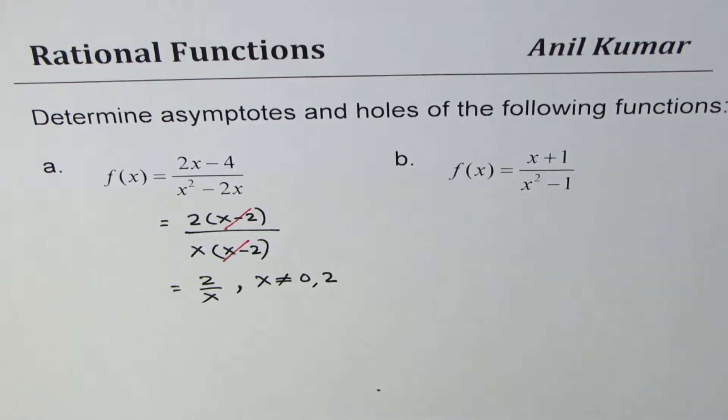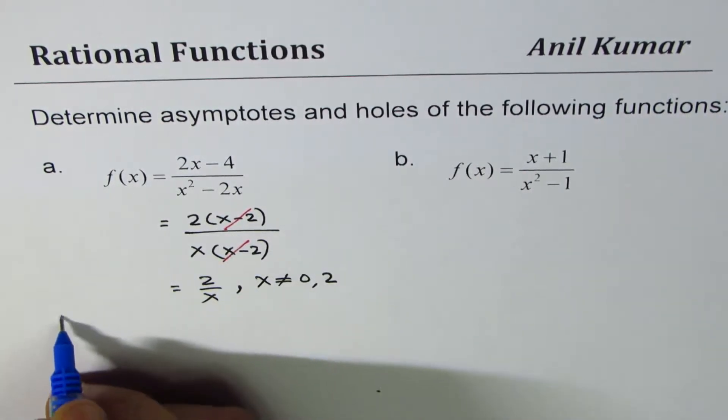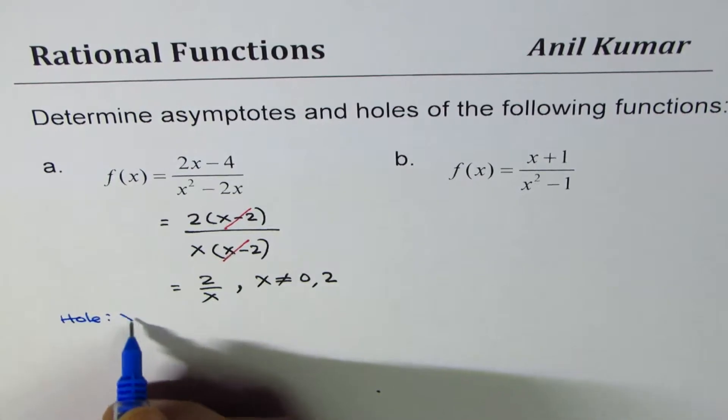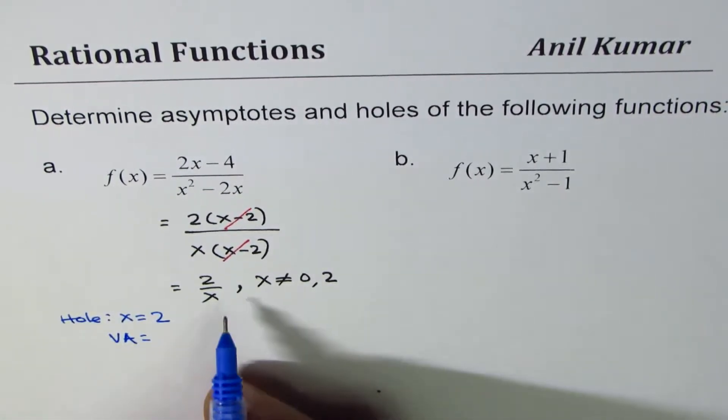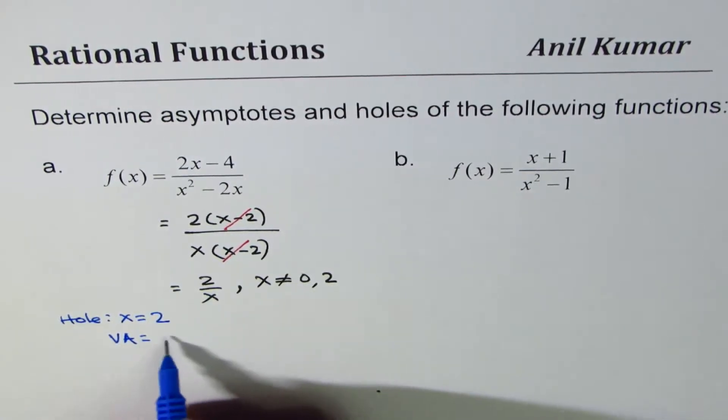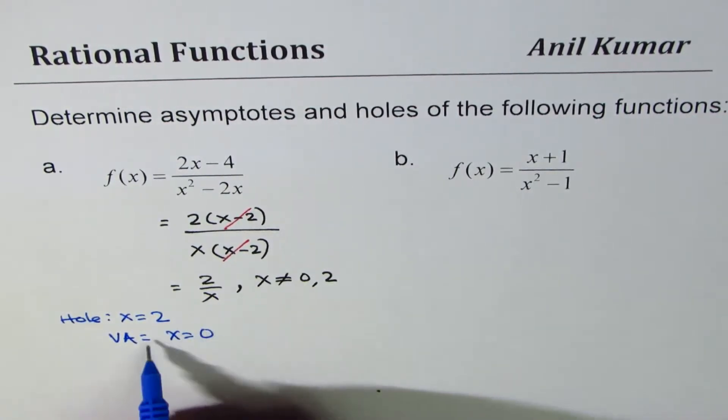Now you can easily write holes. The factor which cancelled: we can say hole is at x equals 2. Vertical asymptote is the factor which did not cancel, and that is at x equals 0.